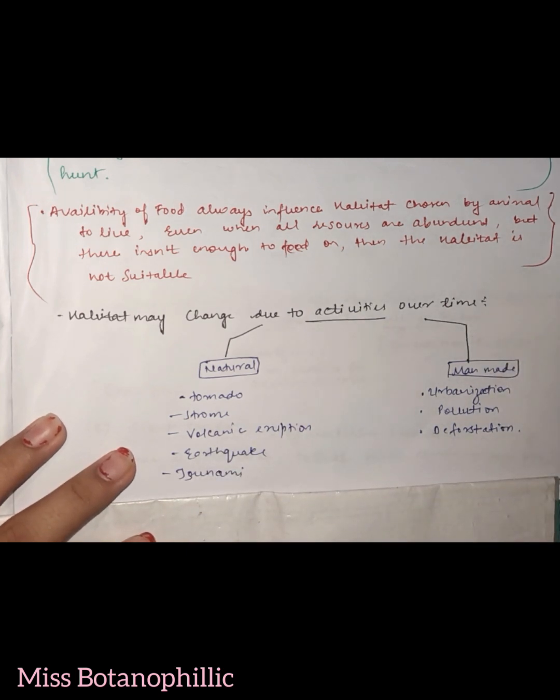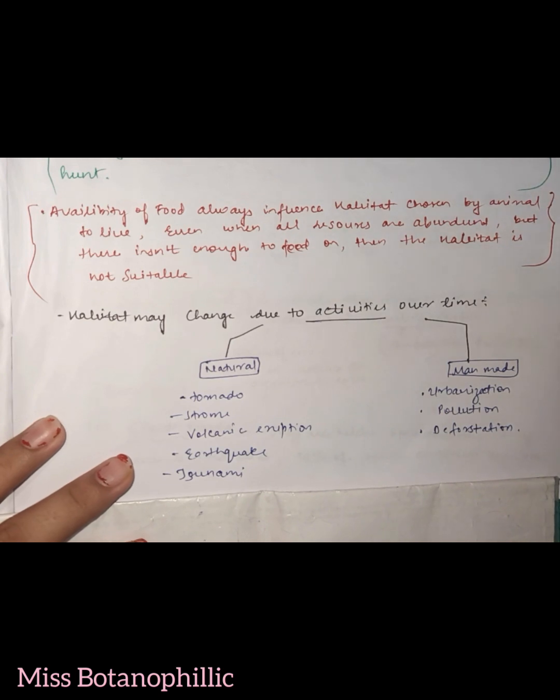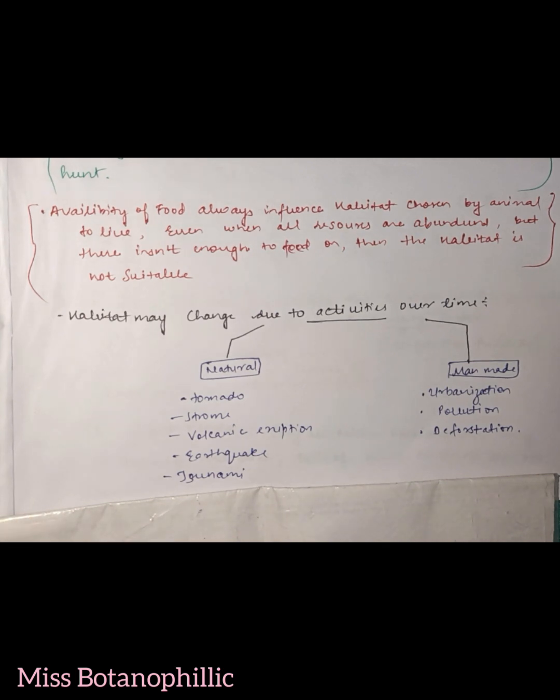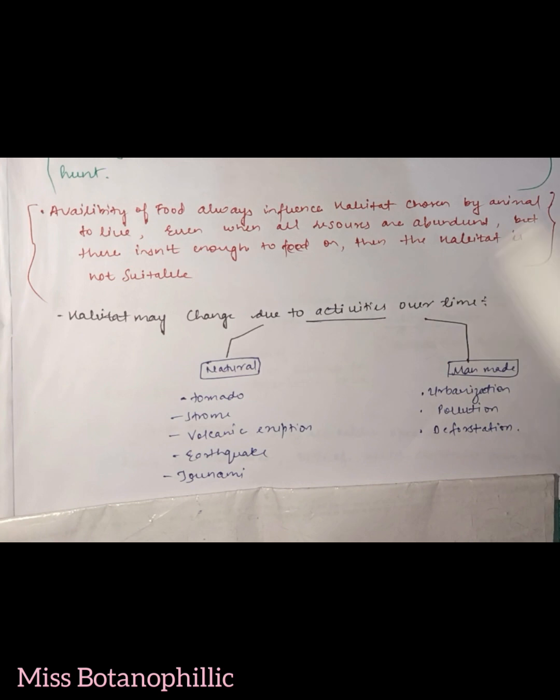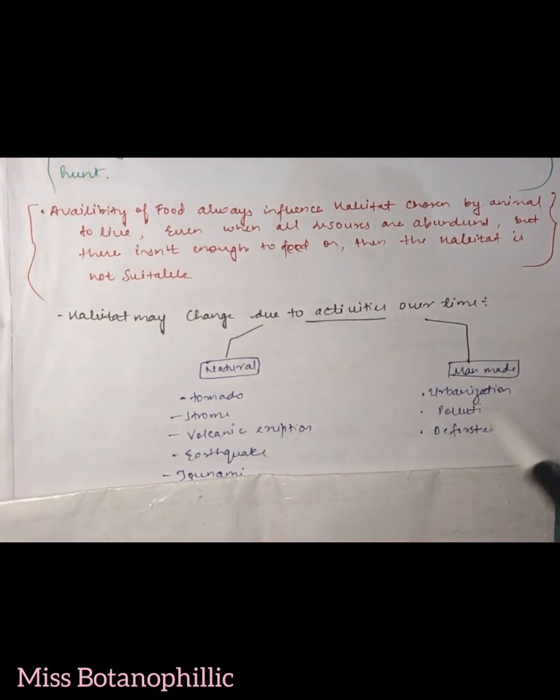When we talk about man-made causes, there is urbanization, pollution, and deforestation. This is just an example at a small level. If we talk about a large level, there are many organisms living in forests. We have cut those forests so that we can build industries. So we have destroyed many organisms' habitats. So habitat is not permanent. It can change time-to-time due to various activities. These activities can be natural or man-made.